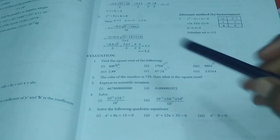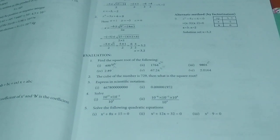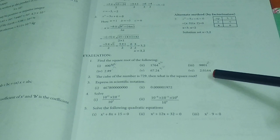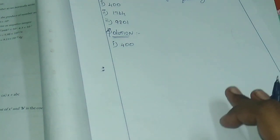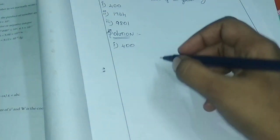The first question is: Find the square root of the following. We have the first 3 normal numbers, and numbers 4, 5, 6 are decimals. This is very easy. We use the LCM method and the long division method. Both are very easy to use.